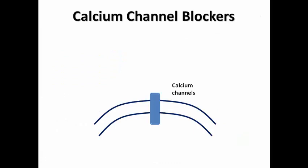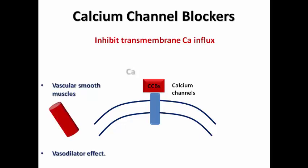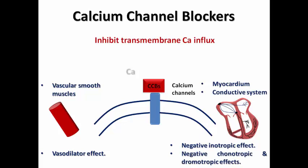Let's briefly revise calcium channel blockers. We have calcium channels on the cell membrane of cardiac muscle fibers and cells of the SA node, AV node, and conductive tissue. They are responsible for calcium influx into the cytoplasm to assist in depolarization of the SA and AV nodes and in contraction of cardiac muscle fibers. Calcium channel blockers block these channels to inhibit transmembrane calcium influx.